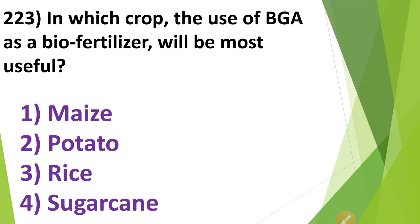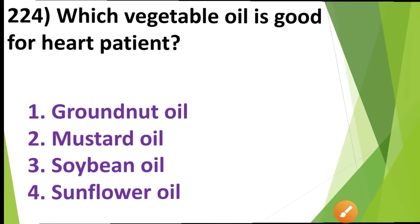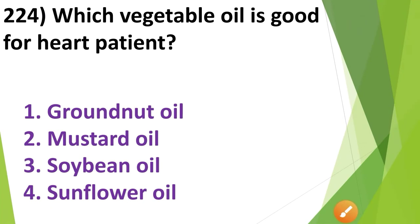In which crop will the use of blue-green algae as a bio-fertilizer be most useful? 1. Maize, 2. Potato, 3. Rice, 4. Sugarcane. The use of blue-green algae as a bio-fertilizer will be most useful in rice. The correct answer is Option No. 3.